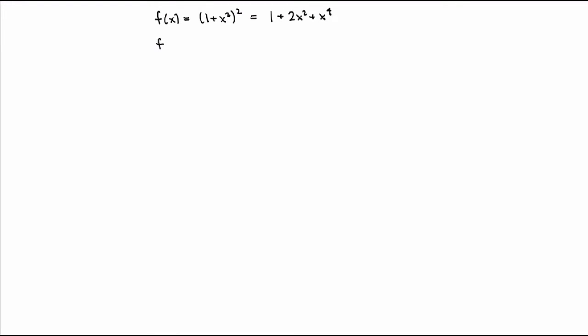But now if instead I had given you the function (1 + x²)^100, that would be crazy. If you want to evaluate the derivative by first expanding the function, it's going to take you a very, very long time. And if instead I give you the square root of (1 + x²), we can't even evaluate the derivative using the rules we've seen. So we need a new rule.